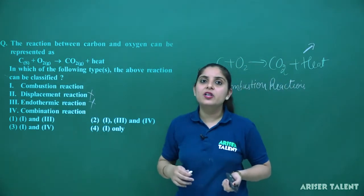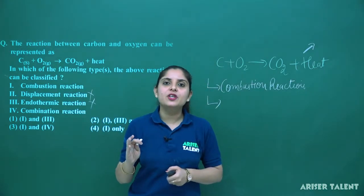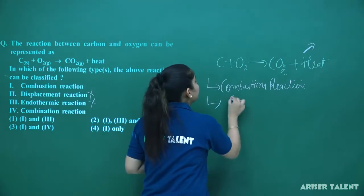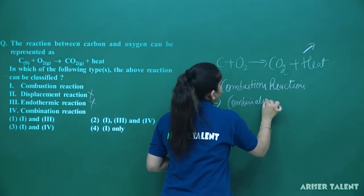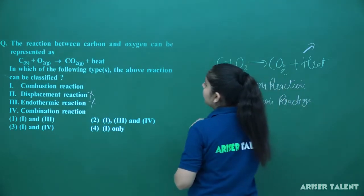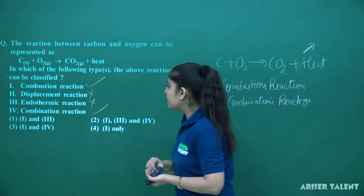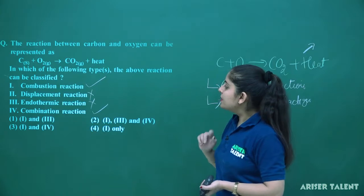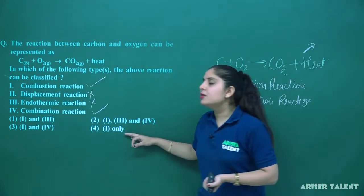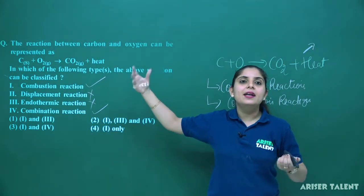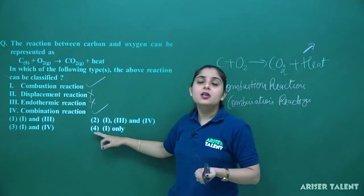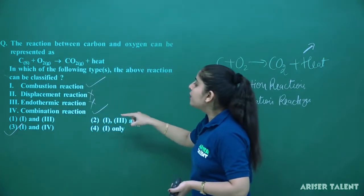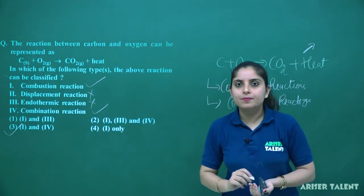This is also a combination reaction. Why is C plus O2 giving CO2 a combination reaction? Because carbon is combining with oxygen — two reactants combine with each other to give a single product. So two options are correct here: 1 and 4. It is a combustion reaction and it is a combination reaction. Options given include 1 and 3 — not possible; 1, 3 and 4 — not possible; 1 and 4 — this is the right answer. You cannot go directly with just one answer because wrong answers are also provided to confuse students. Option numbers 1 and 4 are correct.